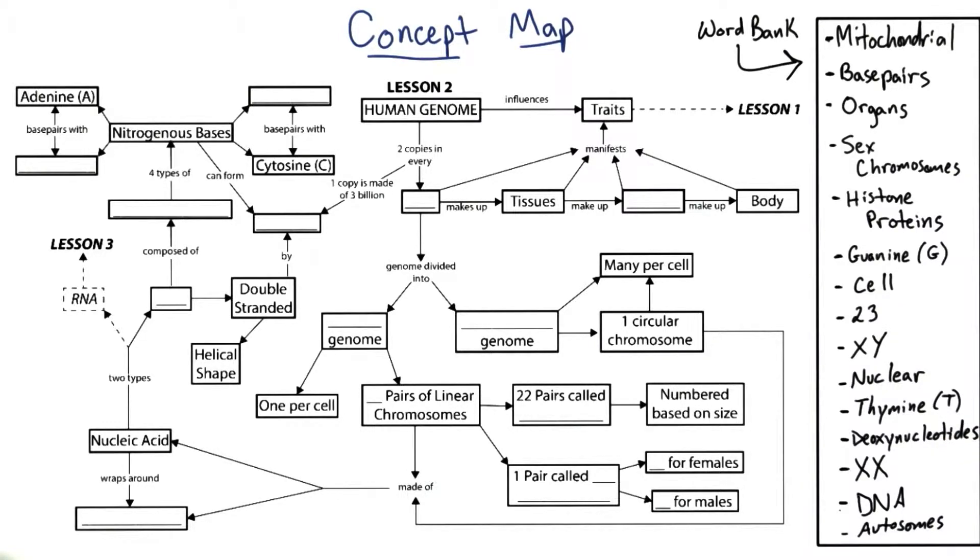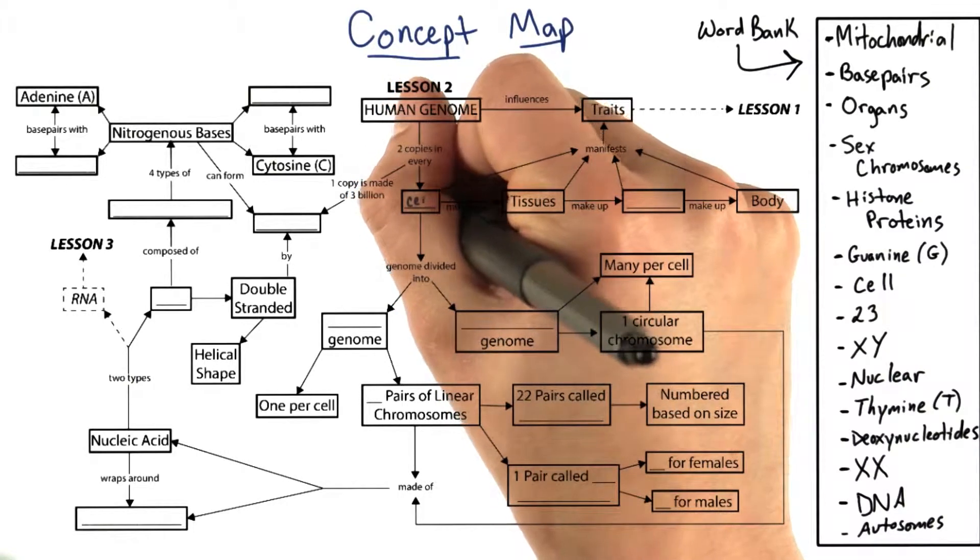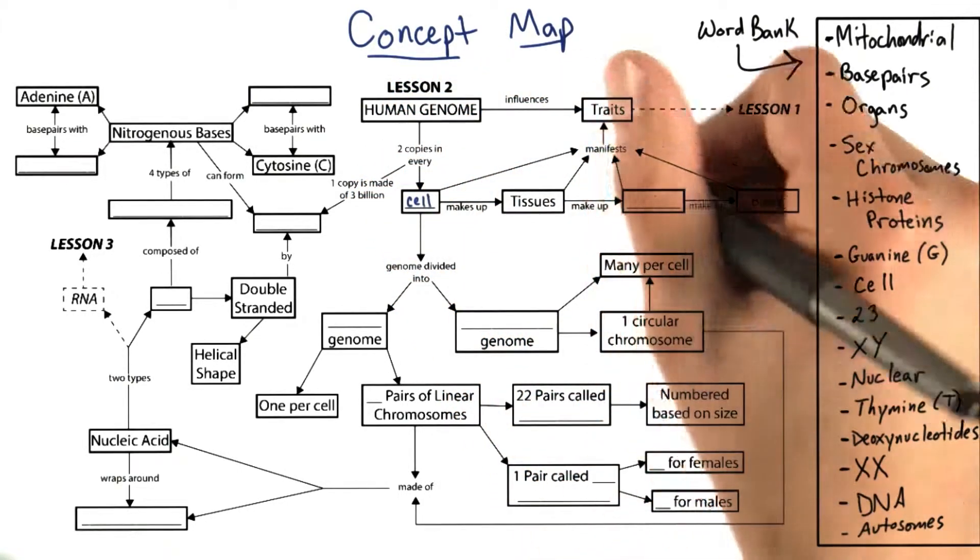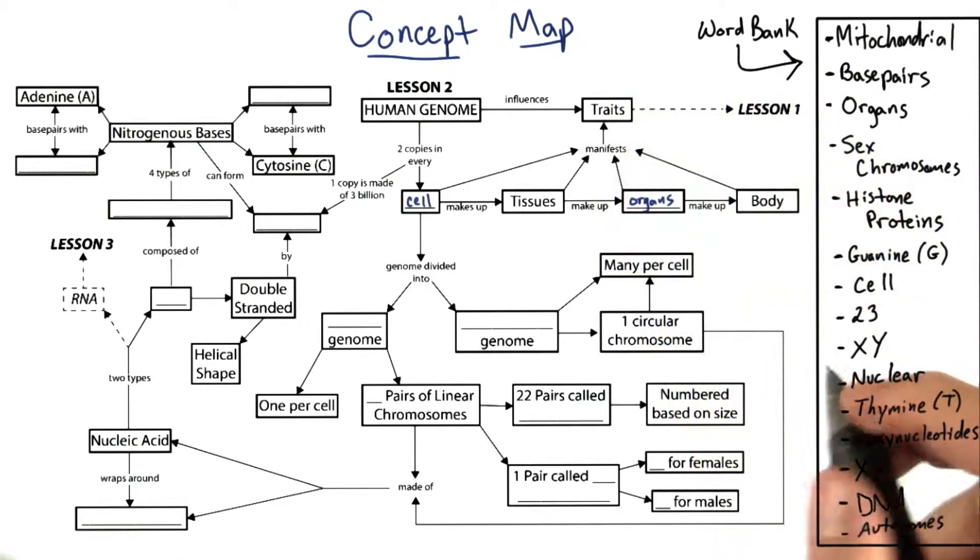Let's see how you did with the concept map. We know that there are two copies of the human genome in every cell, and cells make up tissues, which make up organs, which make up the body.